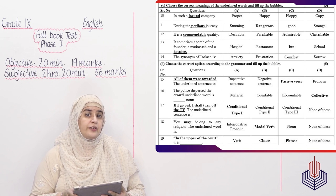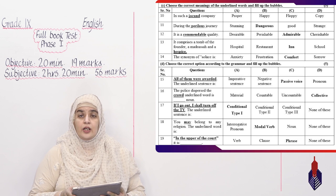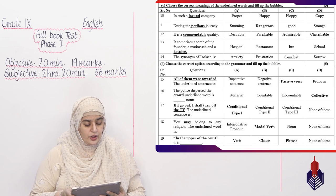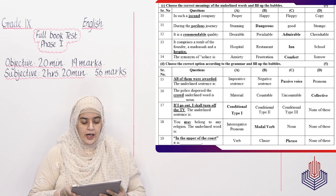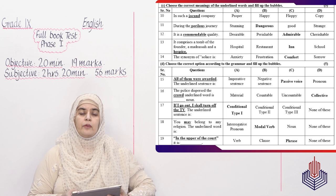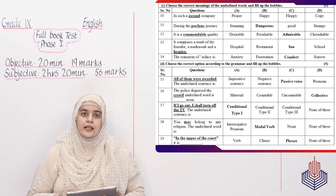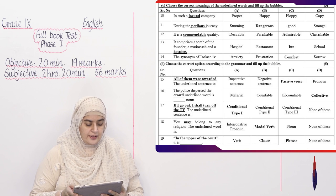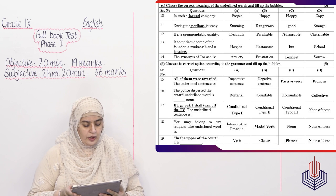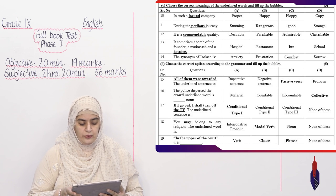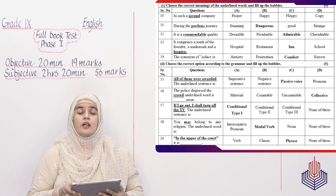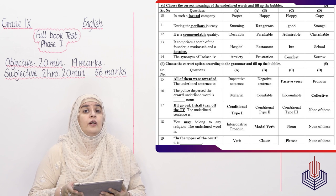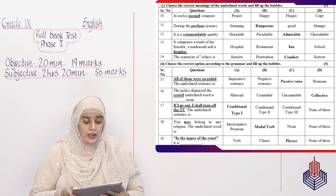The last five MCQs are asking you to circle the correct option which is related to the grammar topics. Aur aapka pehla MCQ hai: All of them were awarded. Underline sentence. Aapka imperative hai, negative hai, passive voice hai ya pronouns hai. They were all awarded is the active voice, aur all of them were awarded is the passive voice. Aur aapki option number C is the right answer. Then MCQ number 16 is asking you: The police disperse the crowd. Crowd kaunsa noun hai? Material, countable, uncountable ya collective. Crowd jo hai wo collective noun hai, jo bohat saray log regardless of their gender ek jagah khade hoonge, kuch witness kar rahe hoonge.